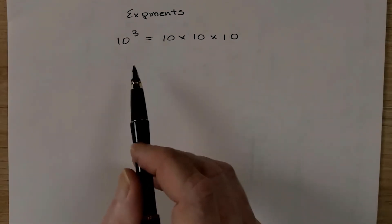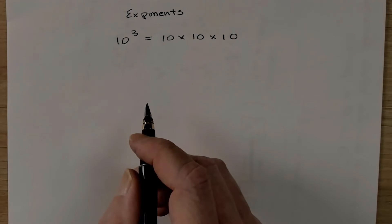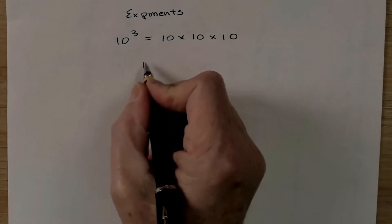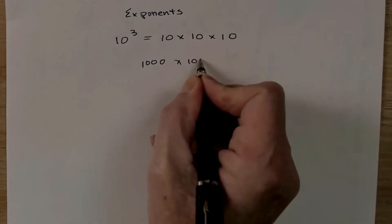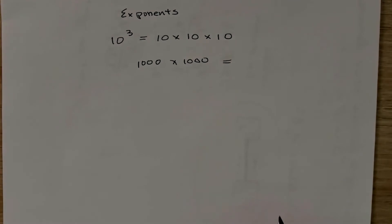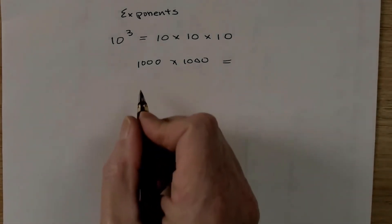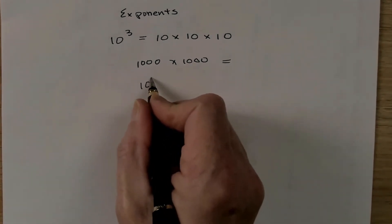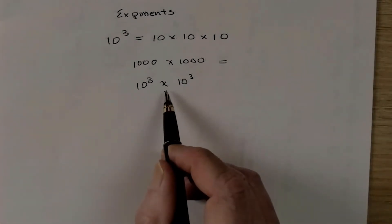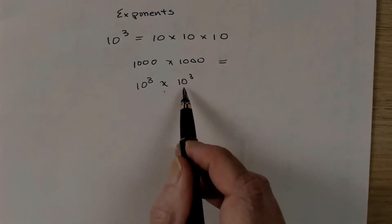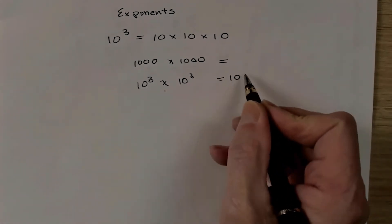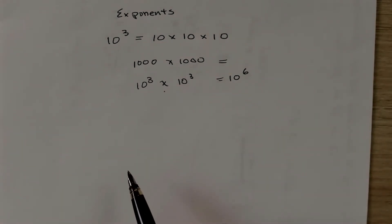Now why would we use exponents? So let's use an example of something that could be somewhat difficult to do in your head. So let's multiply 1,000 times 1,000. What's that equal? Well, let's look at that real quick. That's 10 to the 3 times 10 to the 3. When you multiply exponents of the same base, you simply add the exponents together. So you would get 10 to the 6, because 3 plus 3 equals 6.